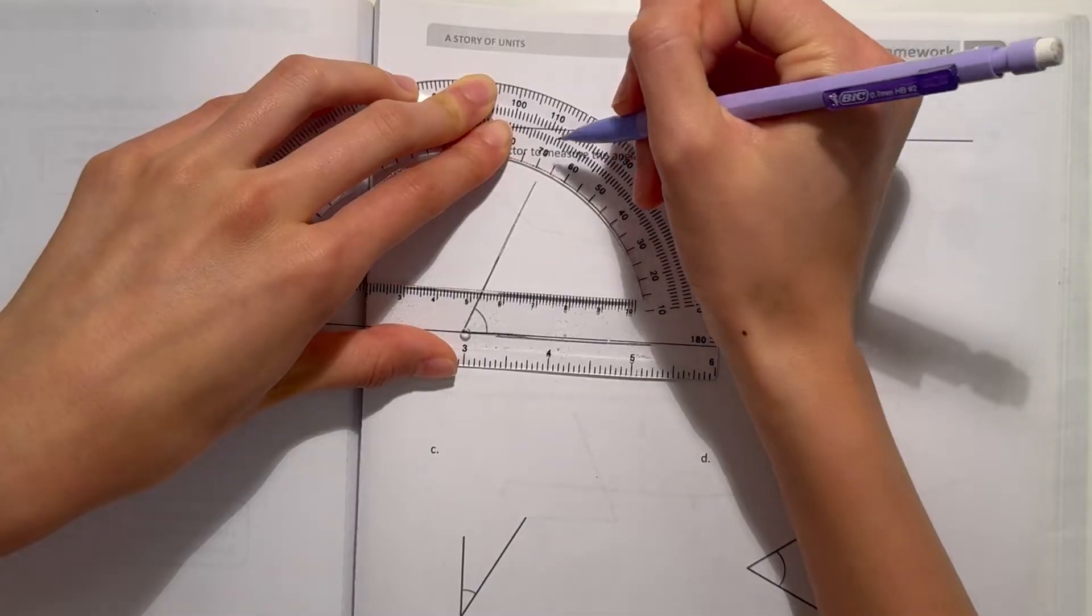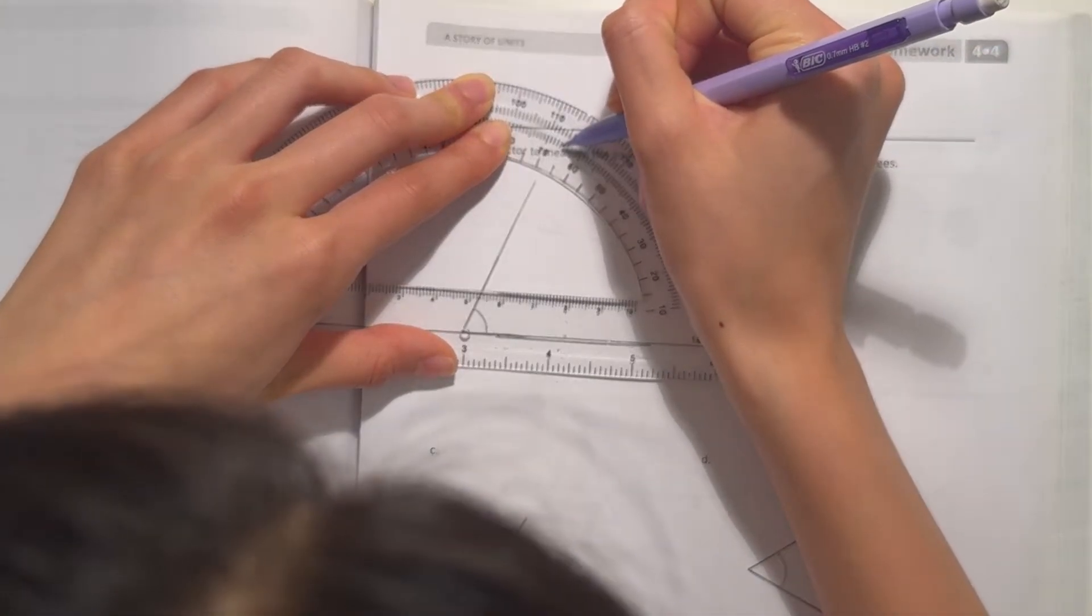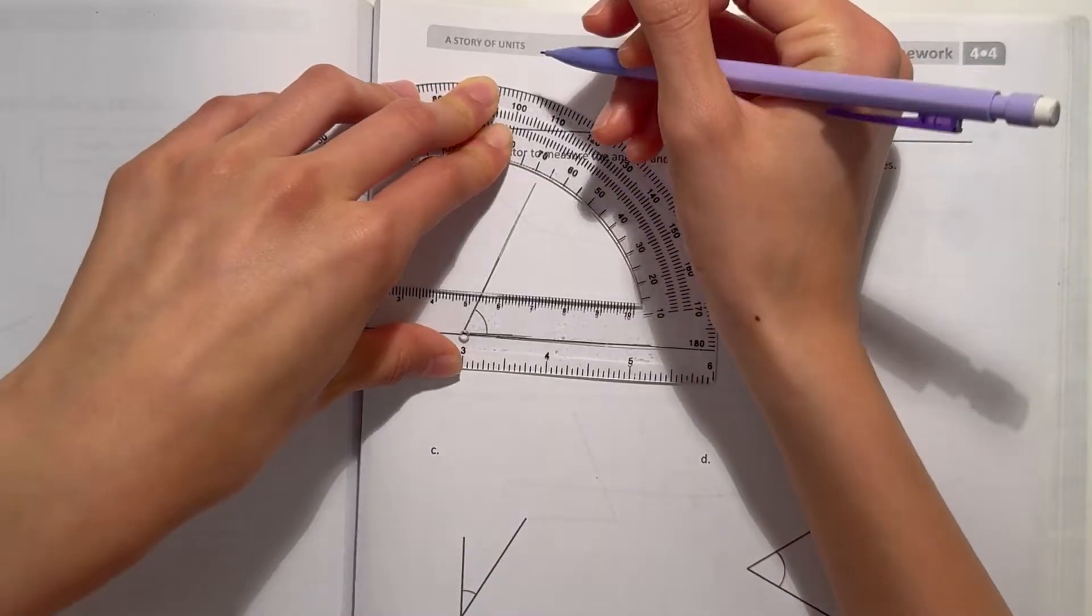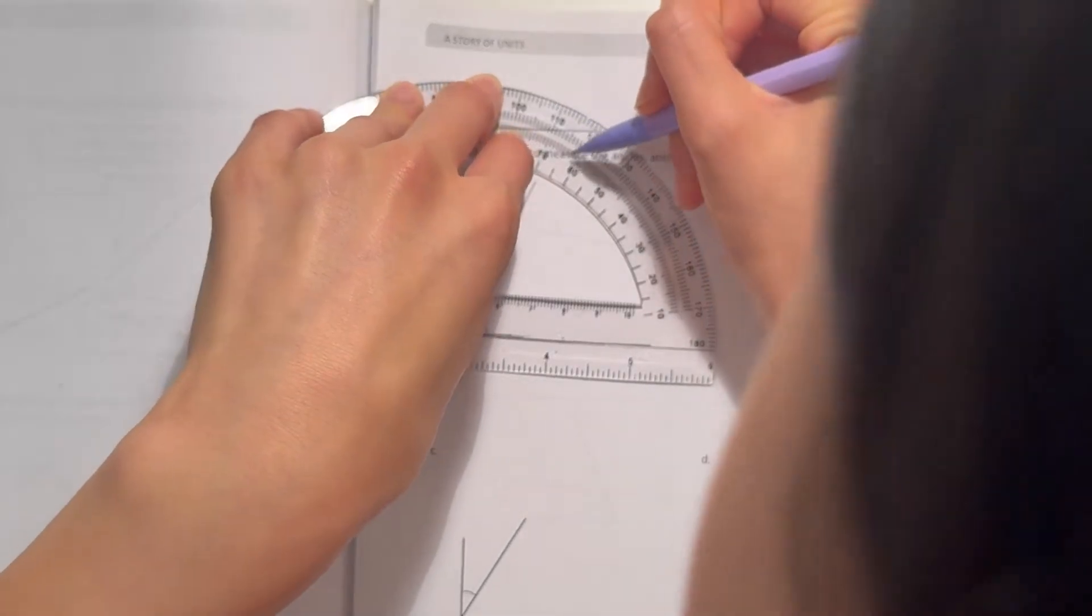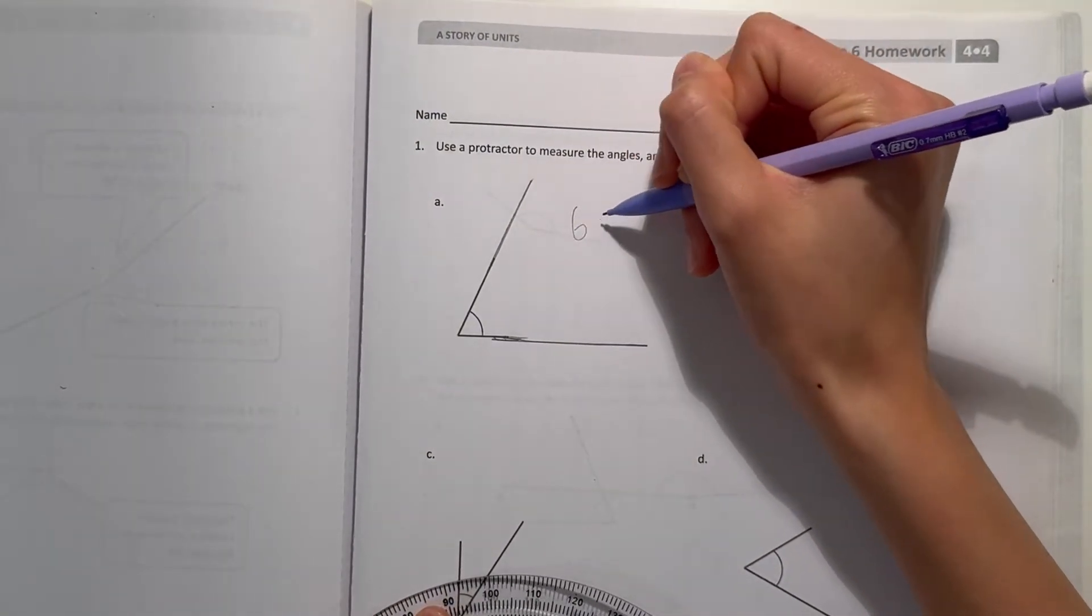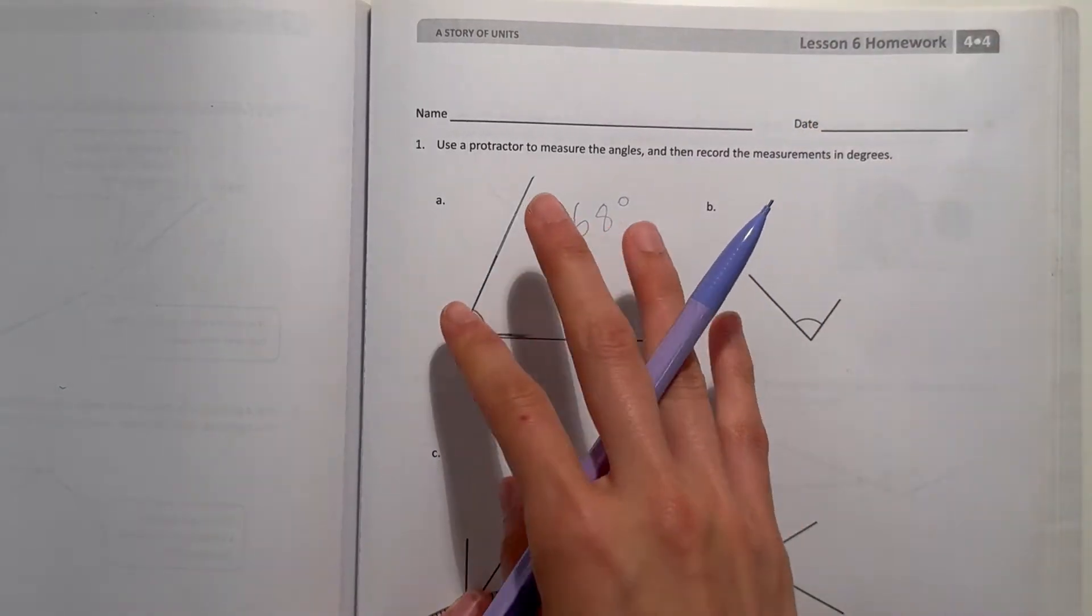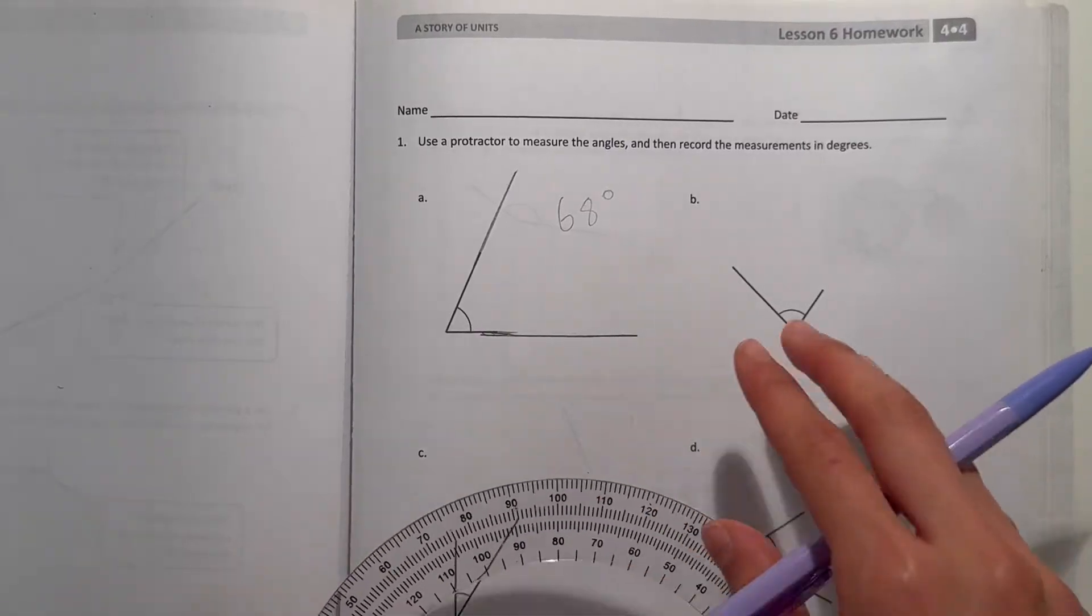But let's see, 70, 60, we have 65, 66, 67, 68. It's around 65, 68. So we'll just say it's about 68 degrees. And this makes sense because this angle is acute, so it should be less than 90 degrees.